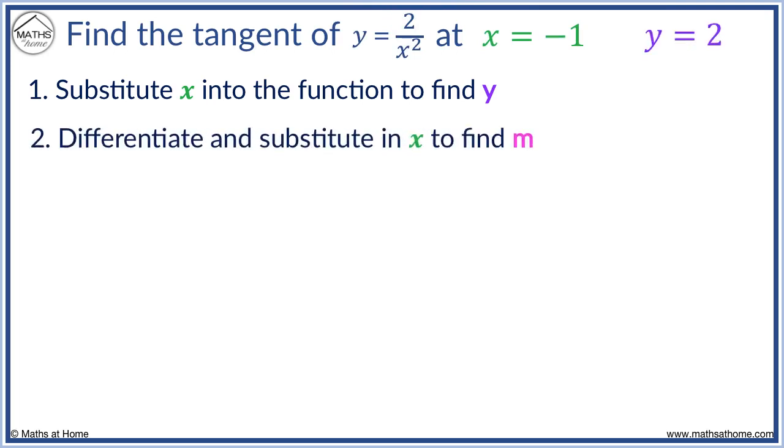Now we differentiate. We first rewrite 2 over x squared as 2x to the minus 2. Differentiating this we get minus 4x to the power of minus 3. Now we sub x equals minus 1 into minus 4x to the minus 3. This gives us m equals 4.